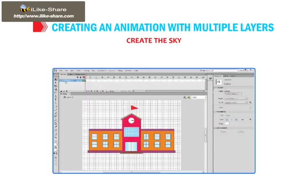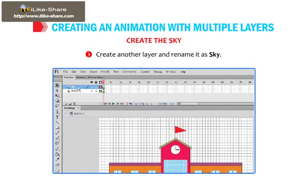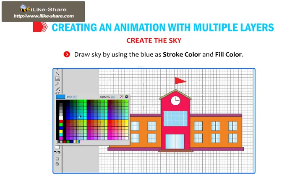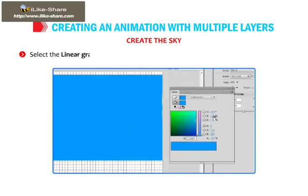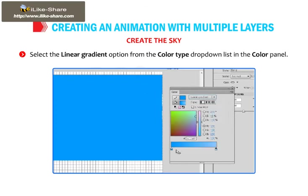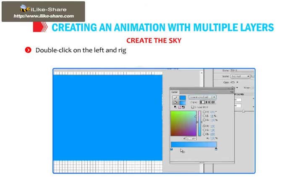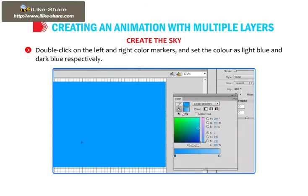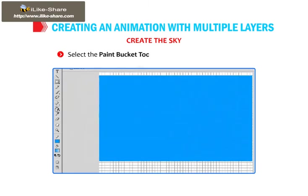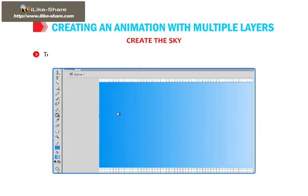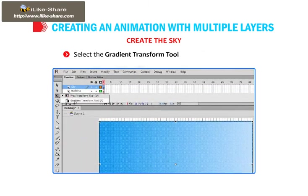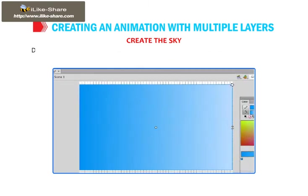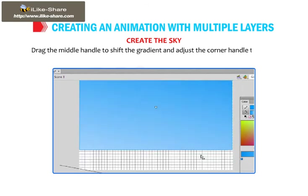Sky creation: create another layer and rename it as 'sky'. Select the Rectangle tool and draw the sky using blue as stroke color and fill color. Choose Window, then Color option to display the Color panel. Select the Linear Gradient option from the color type drop-down list. Double-click on the left and right color markers and set the colors as light blue and dark blue respectively. Select the Paint Bucket tool and click inside the rectangle. To rotate the gradient, select the Free Transform tool, then the Gradient Transform tool from the Tools panel. Drag the middle handle to shift the gradient and adjust the corner handle to rotate it.